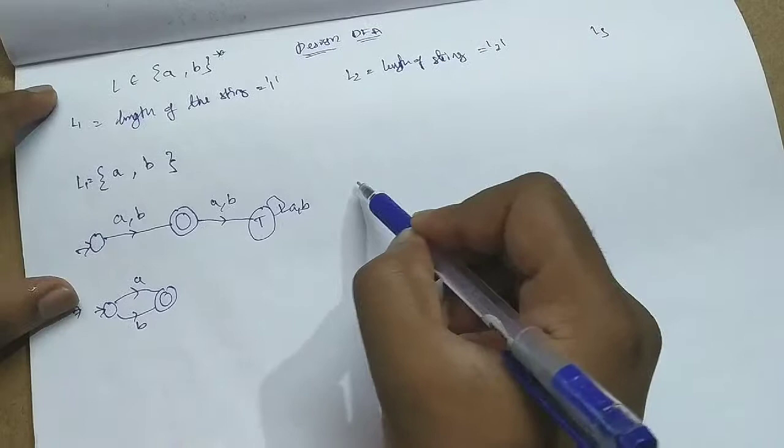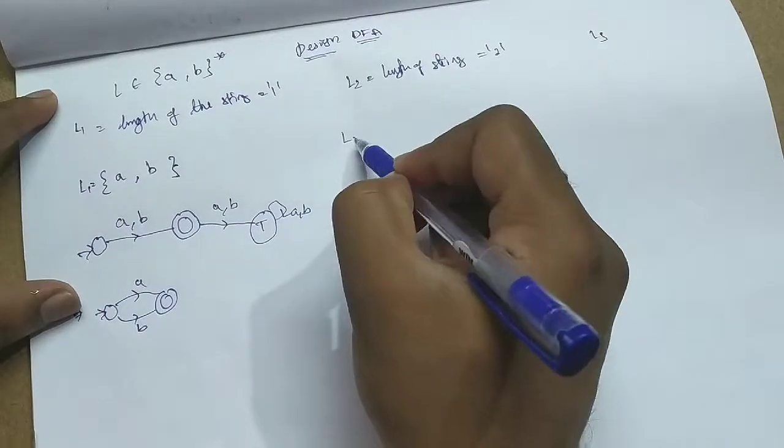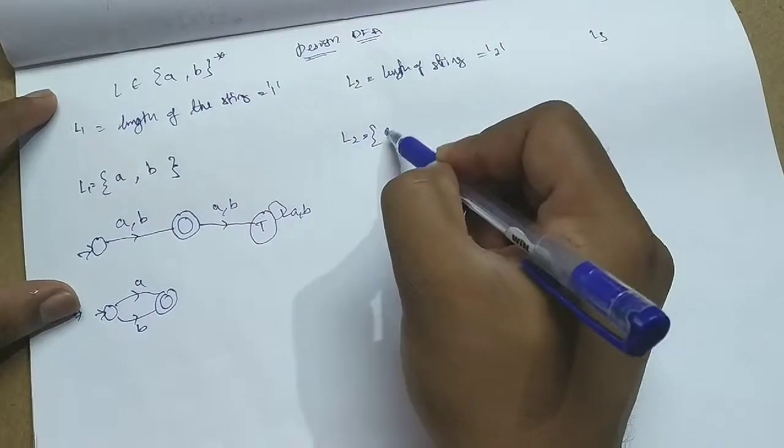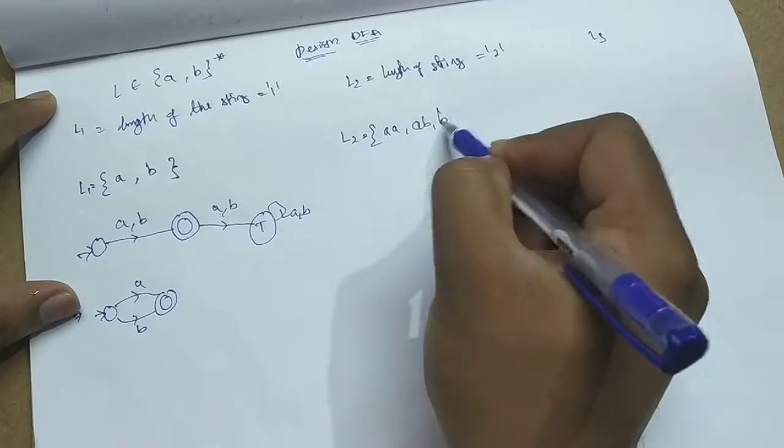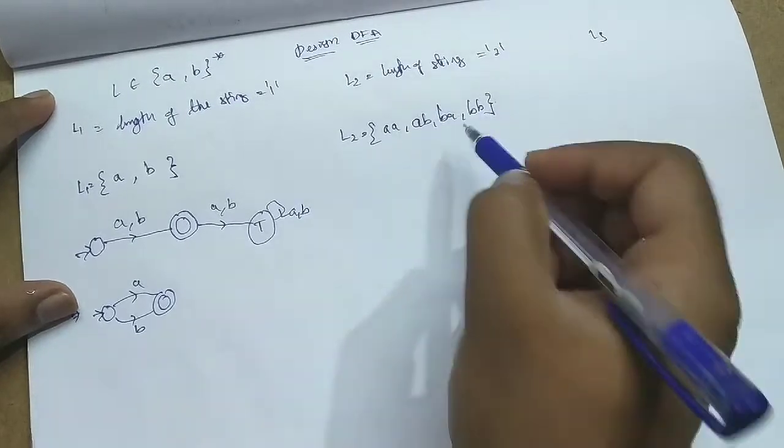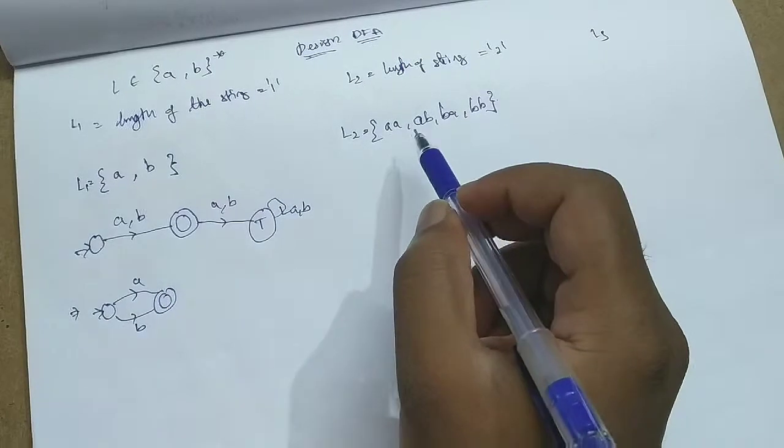If it is length 2, similarly length 2 elements strings. What kind of strings that may occur? 'aa', 'ab', 'ba', 'bb'. It is the finite language. You will be having finite number of strings.